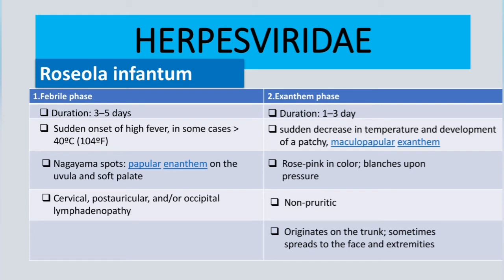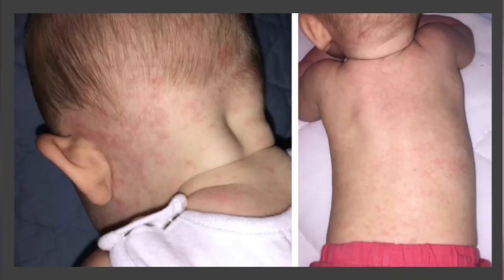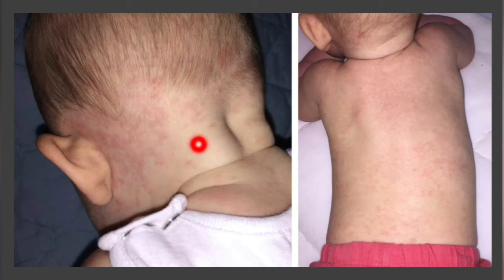The rash originates on the trunk and sometimes spreads to the face and extremities. Here is a picture showing a nine-month-old boy where you can see the rash on the back of the neck and behind the ear.